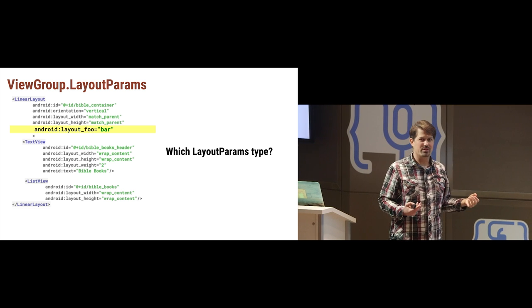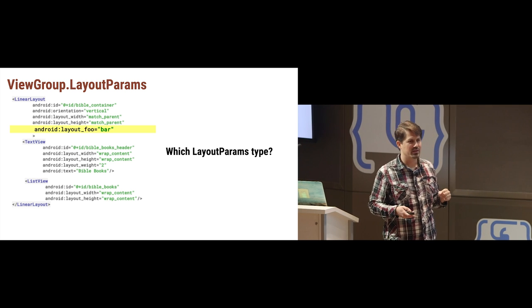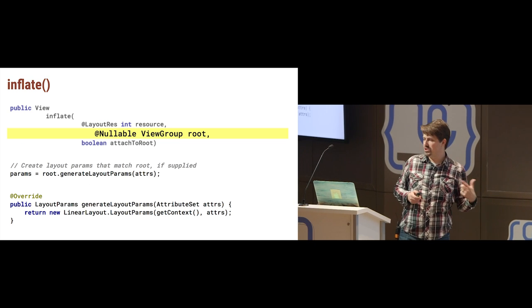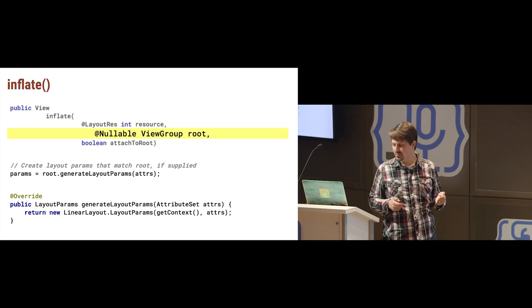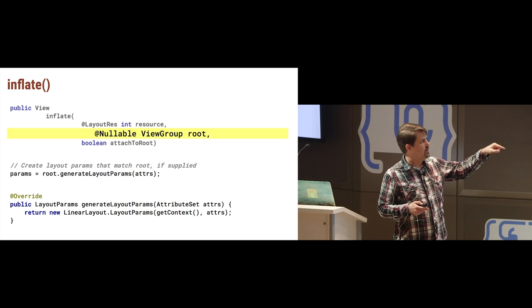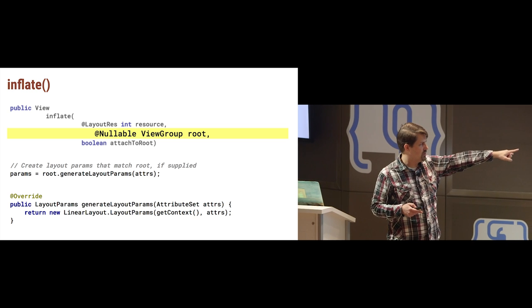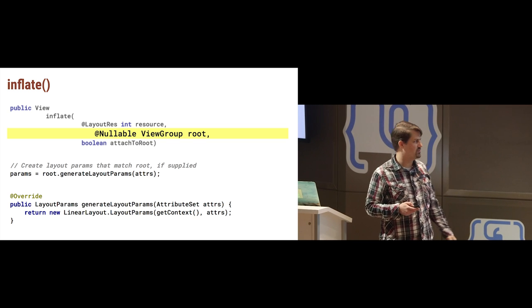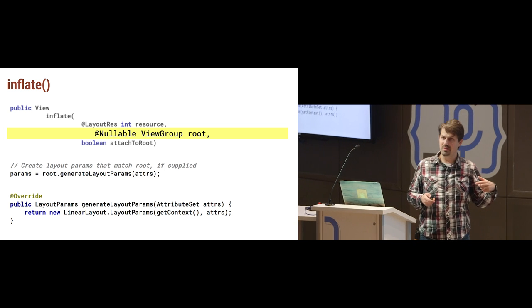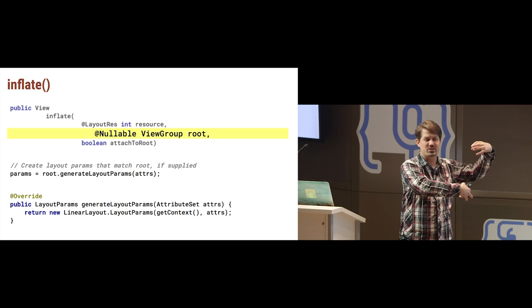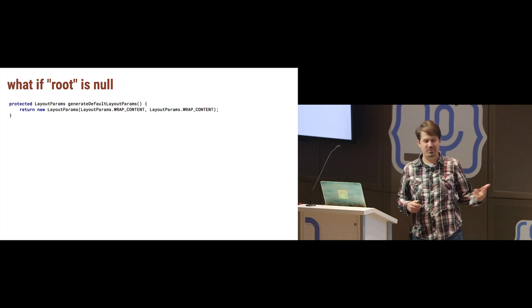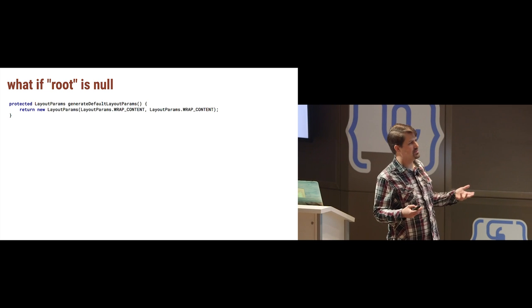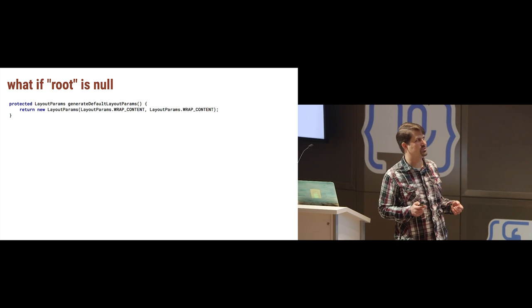When you pass a LinearLayout as root, it calls generateLayoutParams which creates new LinearLayout.LayoutParams — that's how it generates the right params. That's why it's important to pass the ViewGroup that this inflated view will eventually be added to as the second parameter. If you pass null, you just get default LayoutParams and it won't know how to properly size and position your view, so things won't work as expected.